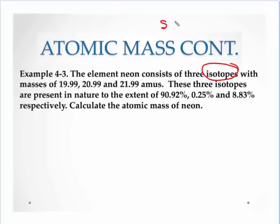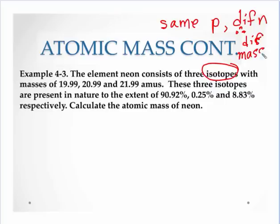Remember, isotopes have the same number of protons, but they have different neutrons, therefore, they have a different mass number. So a different mass number. That's key.